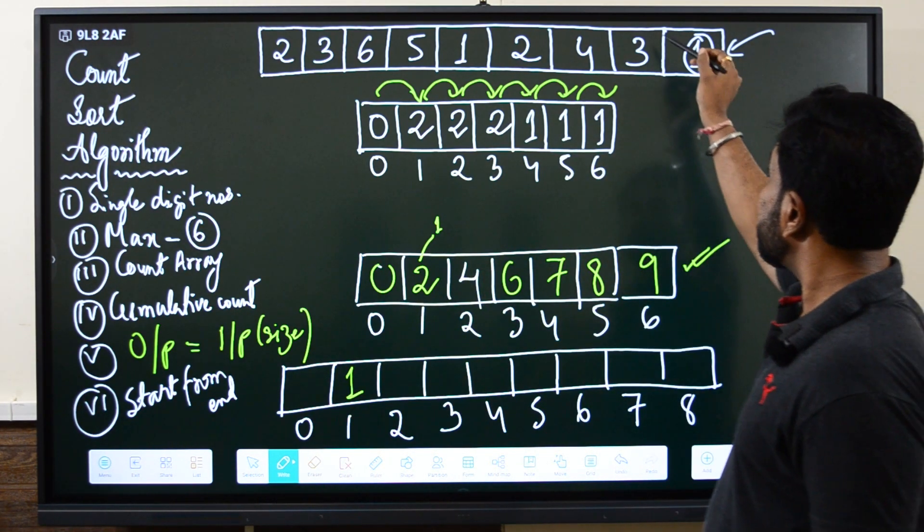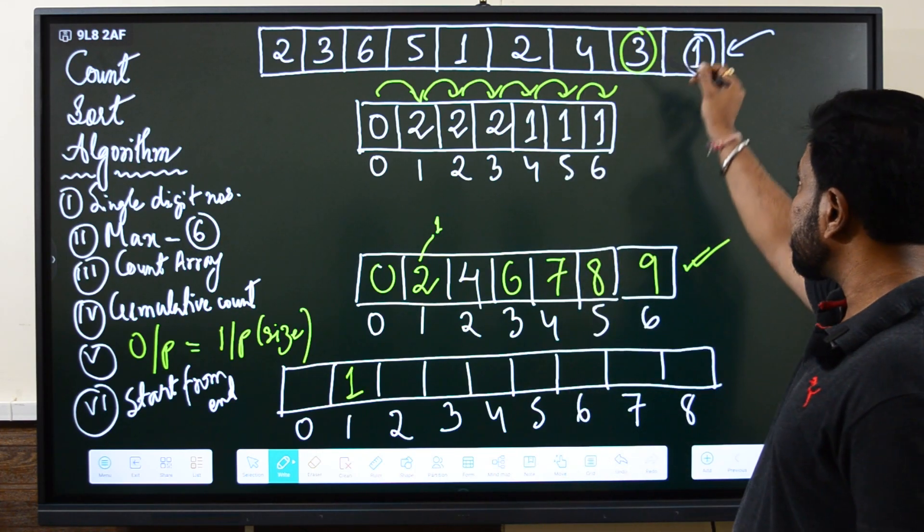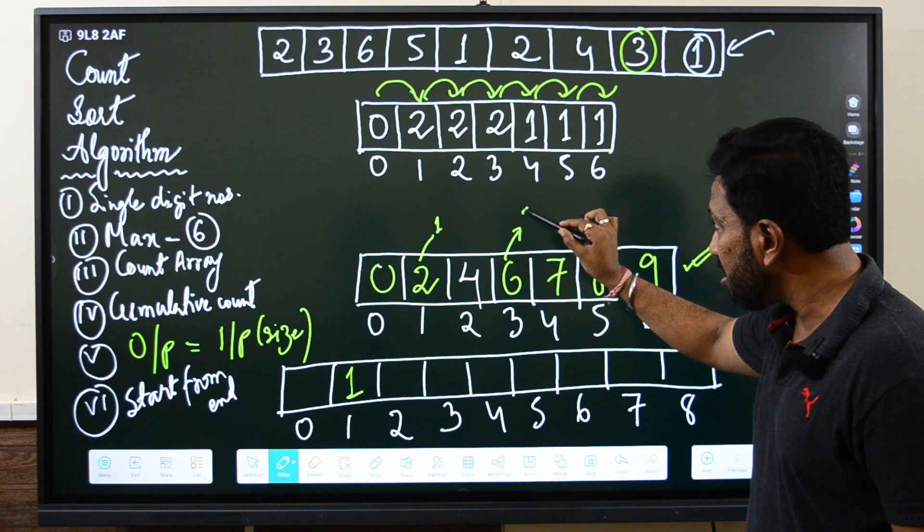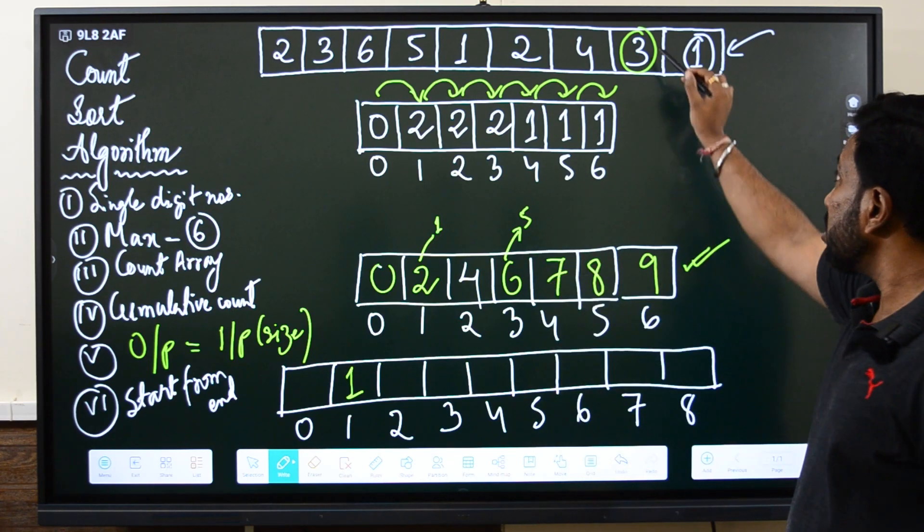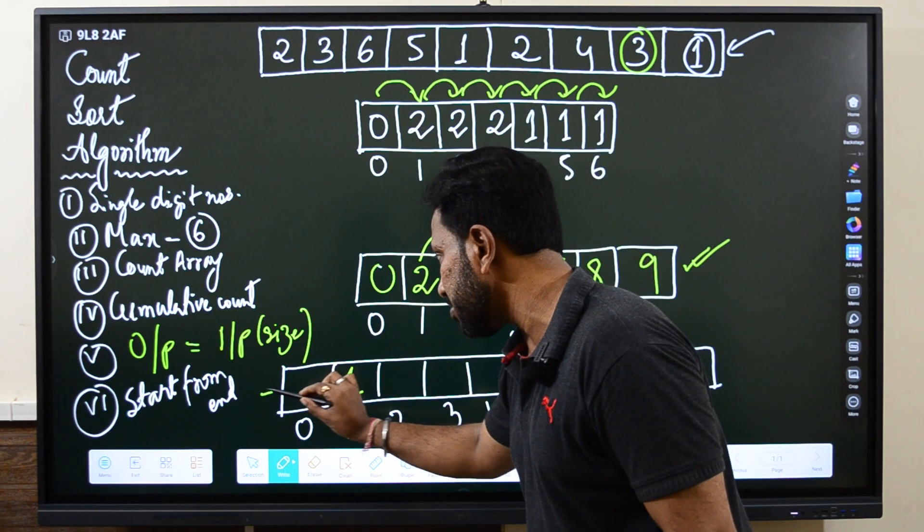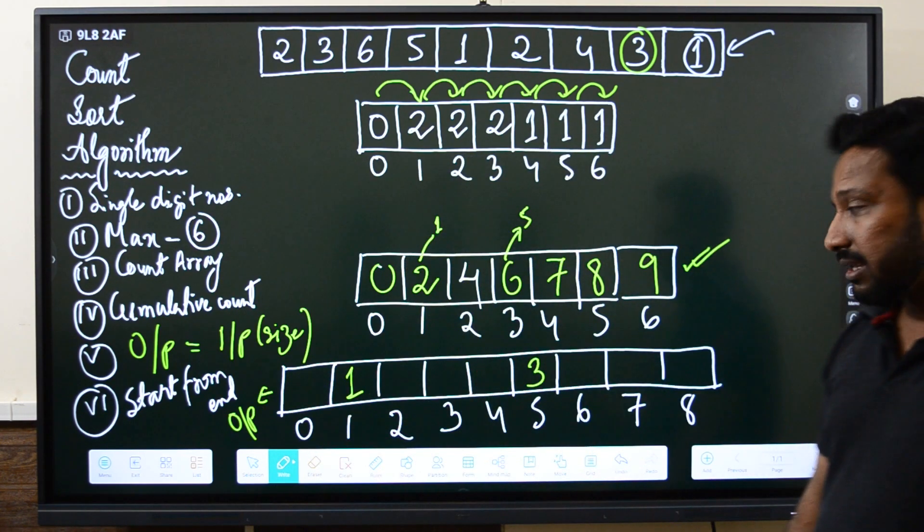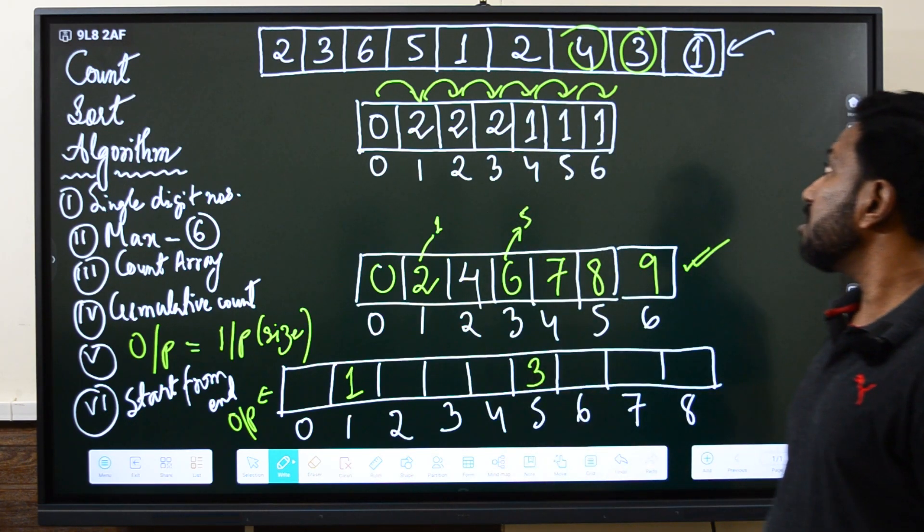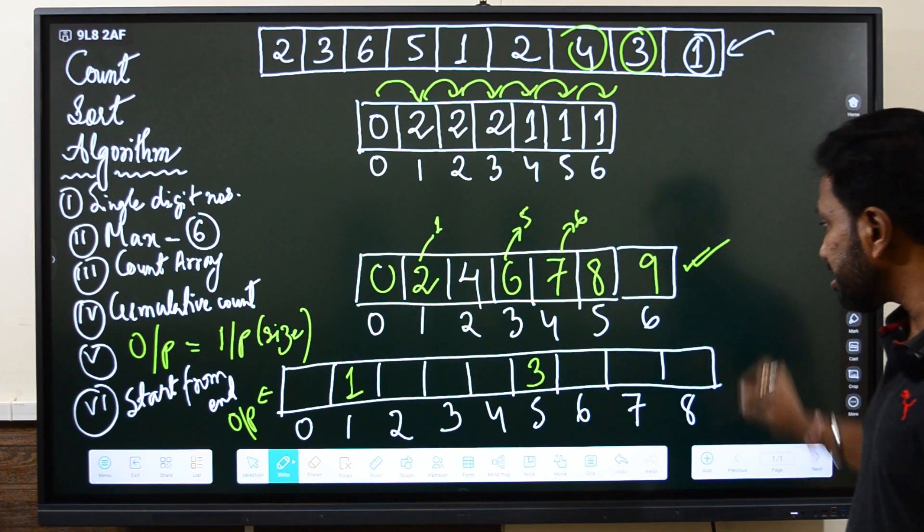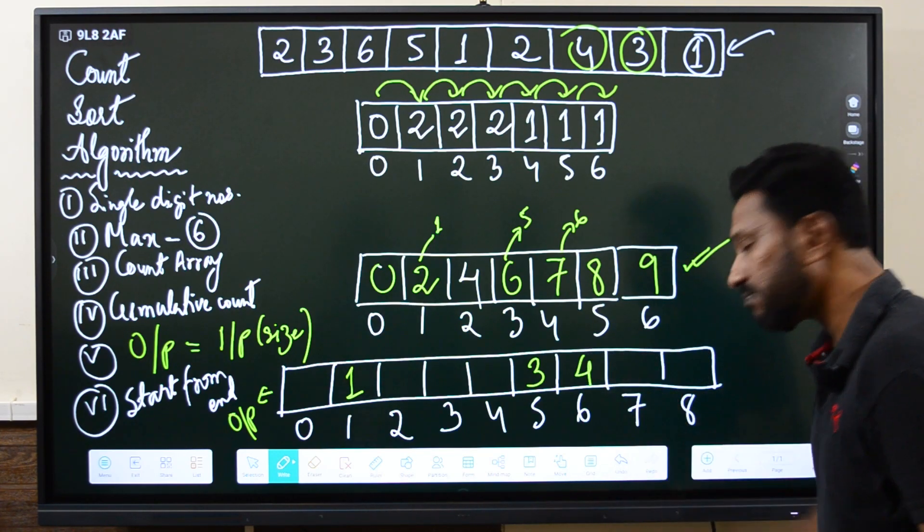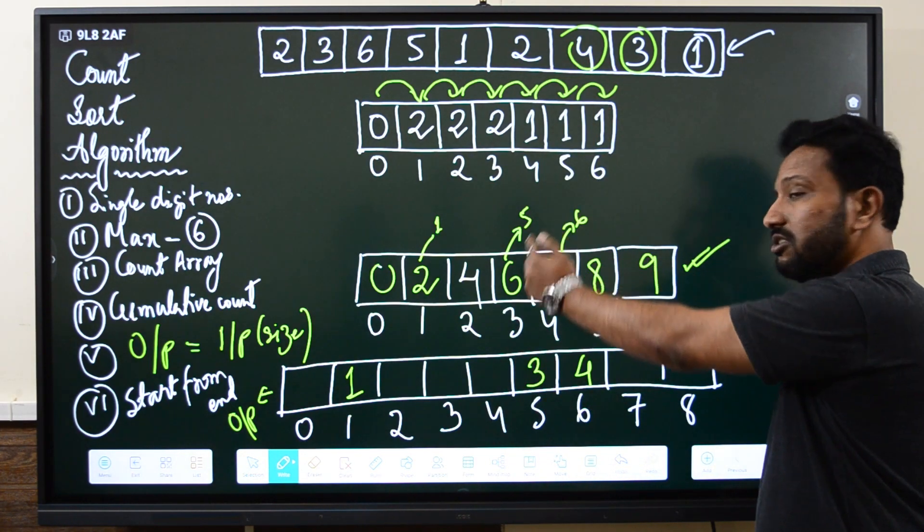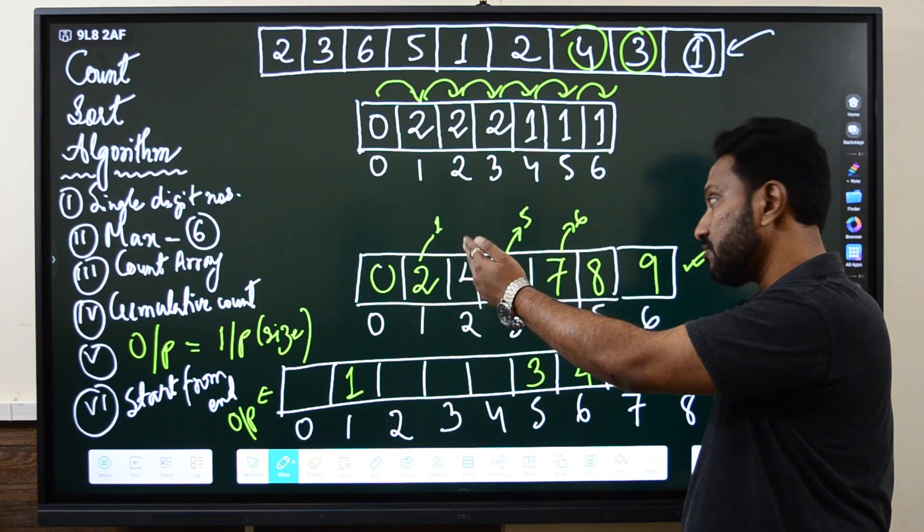Then next number, let us come to this one. This is three. The cumulative count of three is six. So six minus one becomes five. At index number five we will store three here in the output array. Then let us go to the next number now, four. The cumulative count of four is seven. So seven minus one becomes six. At index number six we will store four. Why are we subtracting one? Because we have been adding the current with the previous, so we are subtracting one.